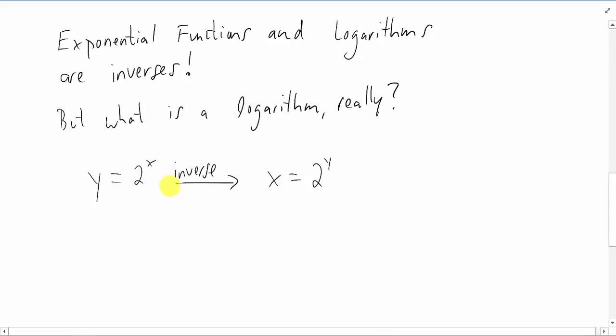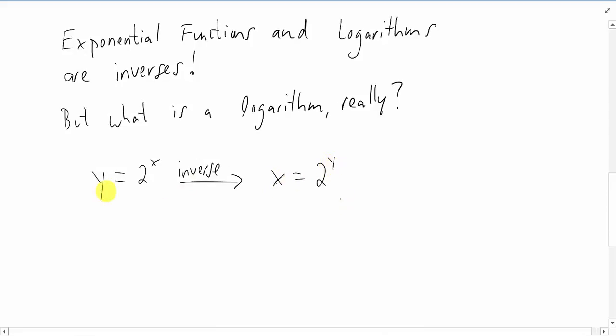Now, if we think about taking an inverse of that exponential function, what we can do is we can just switch the x and y values. And to find our inverse of our original function in previous sections, what we would do then is we would solve for y. Of course, we don't really actually have a way to solve for y here unless we invent something new. So the new thing that we invented is a logarithm. If we solve this equation right here for y, we get y equals the log base 2 of x.